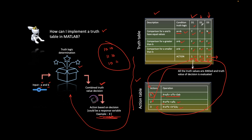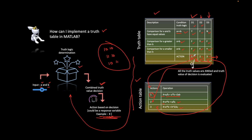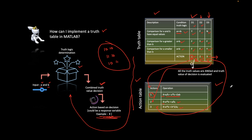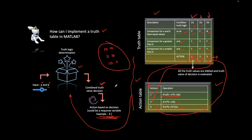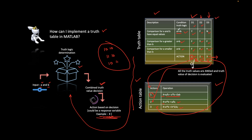You can also repeat actions across decisions. For example, if you take decision D1, you can use action A2, and if you take decision D2, you can also use action A1. The action chart is activated based on whatever value you specify, giving flexibility in how actions and decisions are mapped in the truth table.